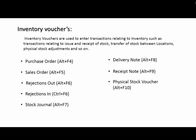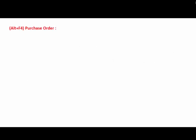Let's understand these voucher types in detail with transactions. First is Purchase Order — the key used is ALT+F4. The Purchase Order is used to place the order with the supplier.